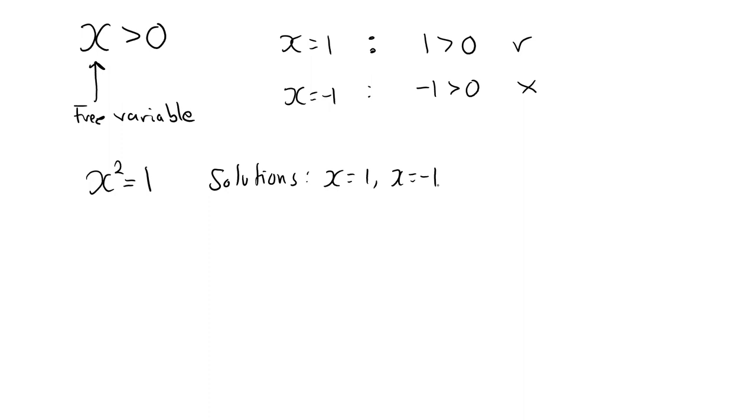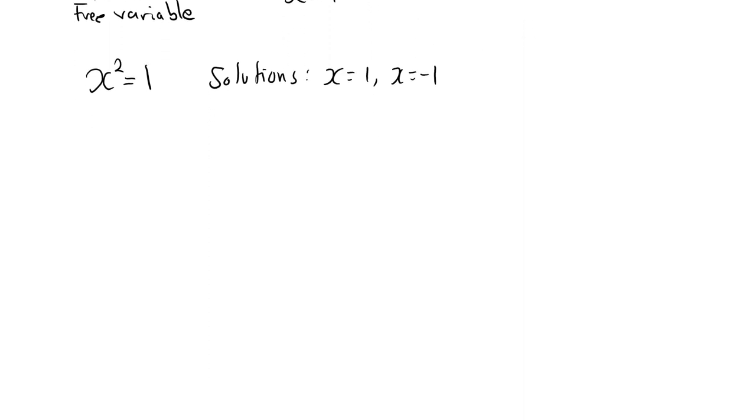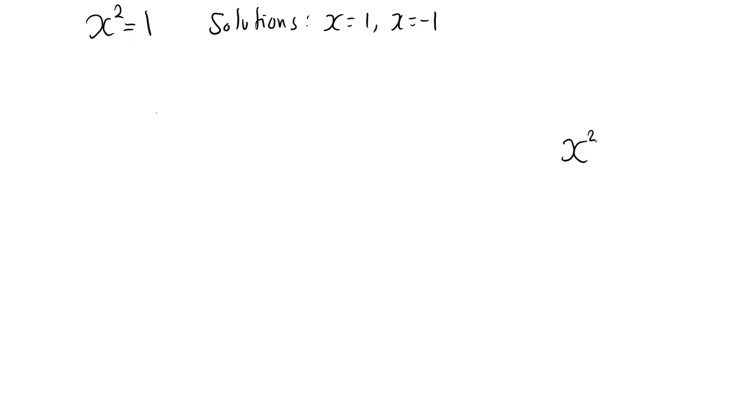However, we have two other ways of turning a predicate into a statement without replacing the free variable with a specific value. Consider again the predicate x squared equal to 1. If I prepend this sentence with, there exists a real number x such that, it becomes, there exists a real number x such that x squared equal to 1.